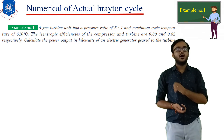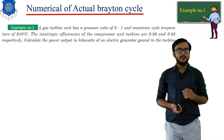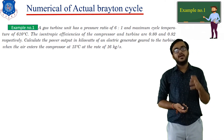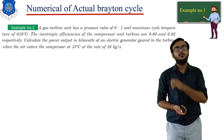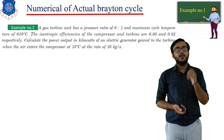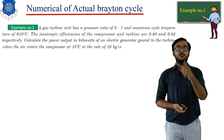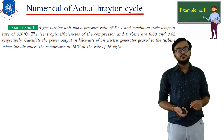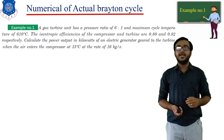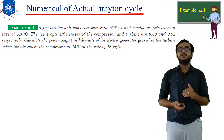Calculate the power output in kilowatts of an electric generator geared to the turbine, when the air enters the compressor at 15 degrees centigrade. So T1 is 15°C. The mass flow rate of air is given as 16 kg per second.